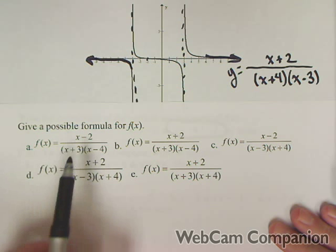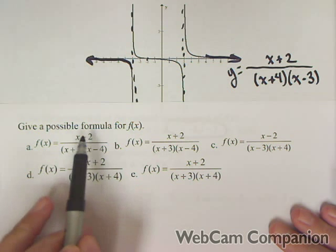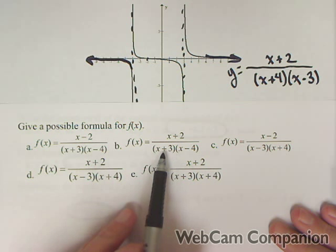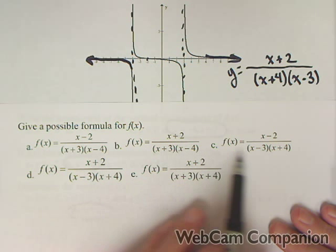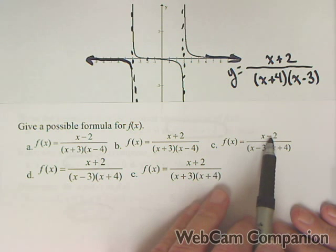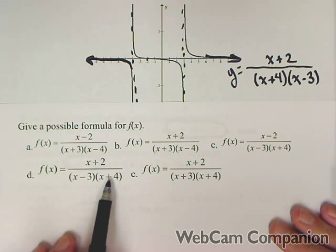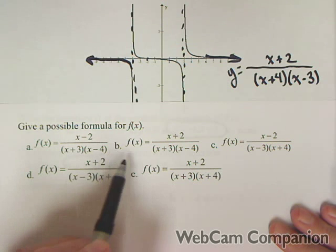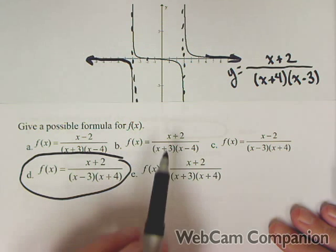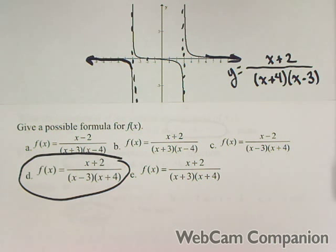Let's see if any of our answers match. One option has backward signs on all three factors. Another has backward signs in the denominator. Another has correct signs in the denominator but the wrong sign in the numerator. The last option has correct signs in the denominator and correct signs in the numerator, so it has to be D. That's how we can use a graph to find all the pieces of a rational function.